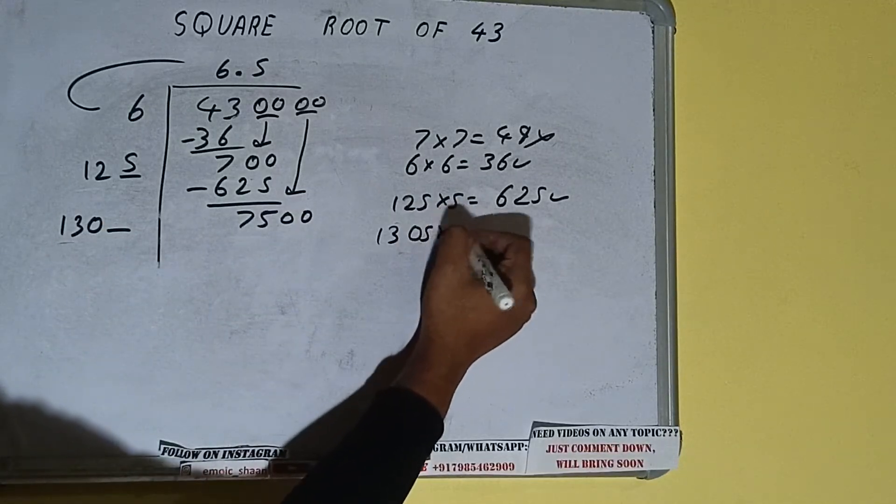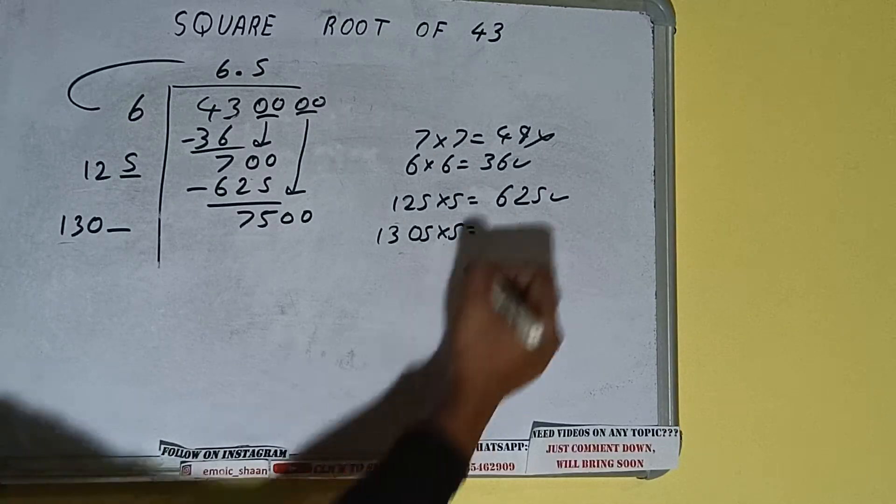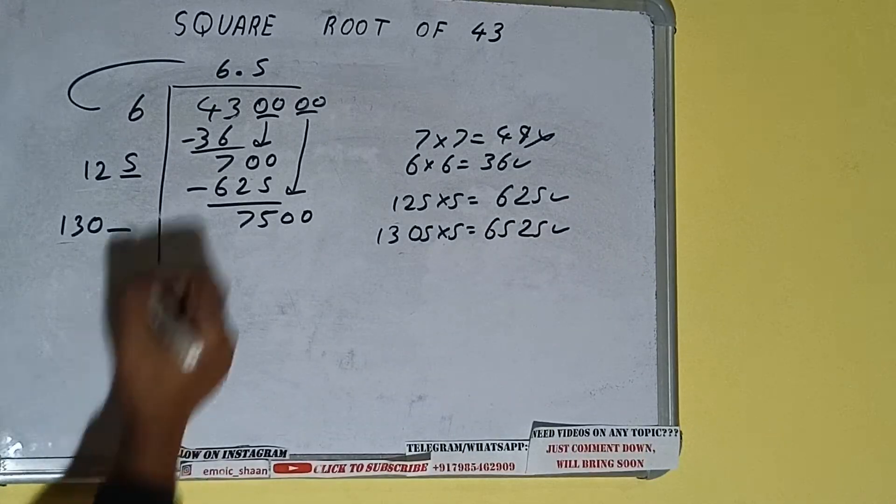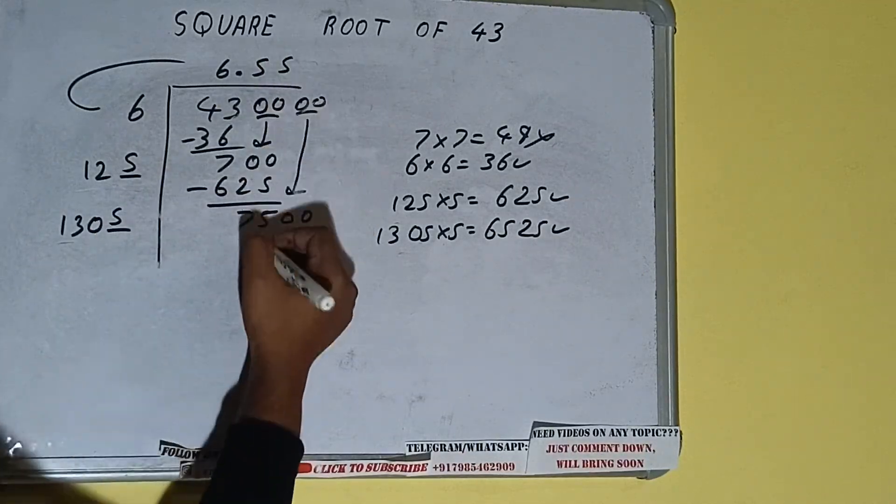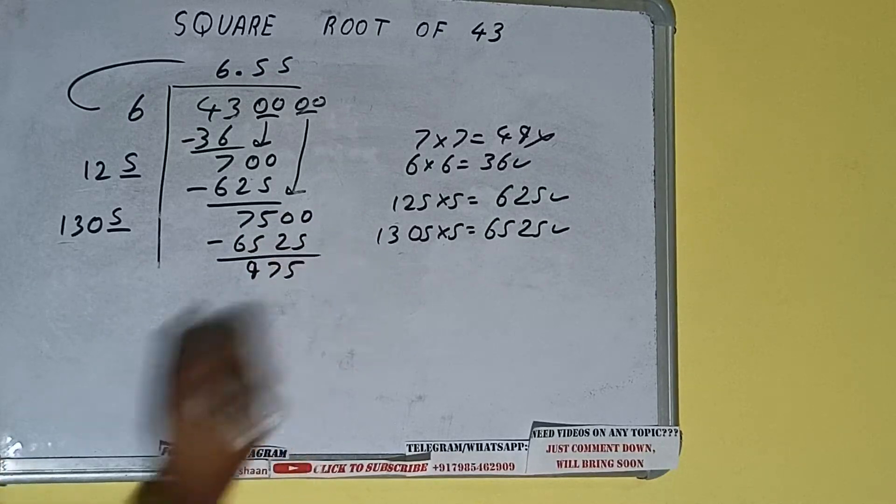1305 into 5 we can try and we'll be having 6525, which is good to take. So 5 here and 5 here, 6525. Subtract, 975 will be left.